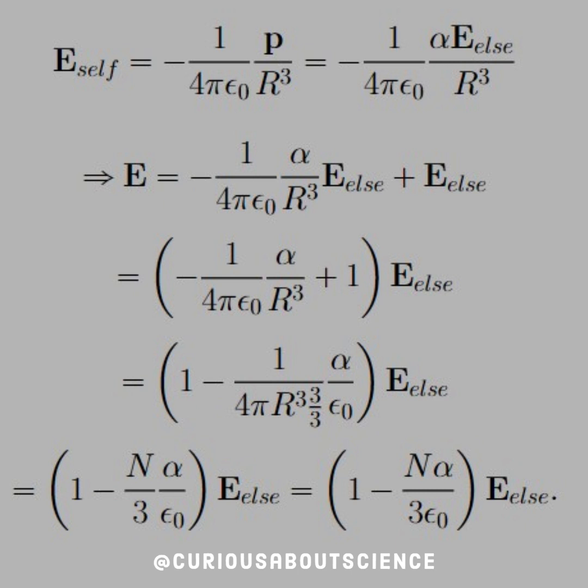So early in the chapter, we talked about what the fields of the dipole were, both in this chapter and in chapter three. So for a single atom, E_self equals -1/(4πε₀) times the dipole that it creates over R³. And then, like we just defined on the previous slide, P is equal to α times E_else.